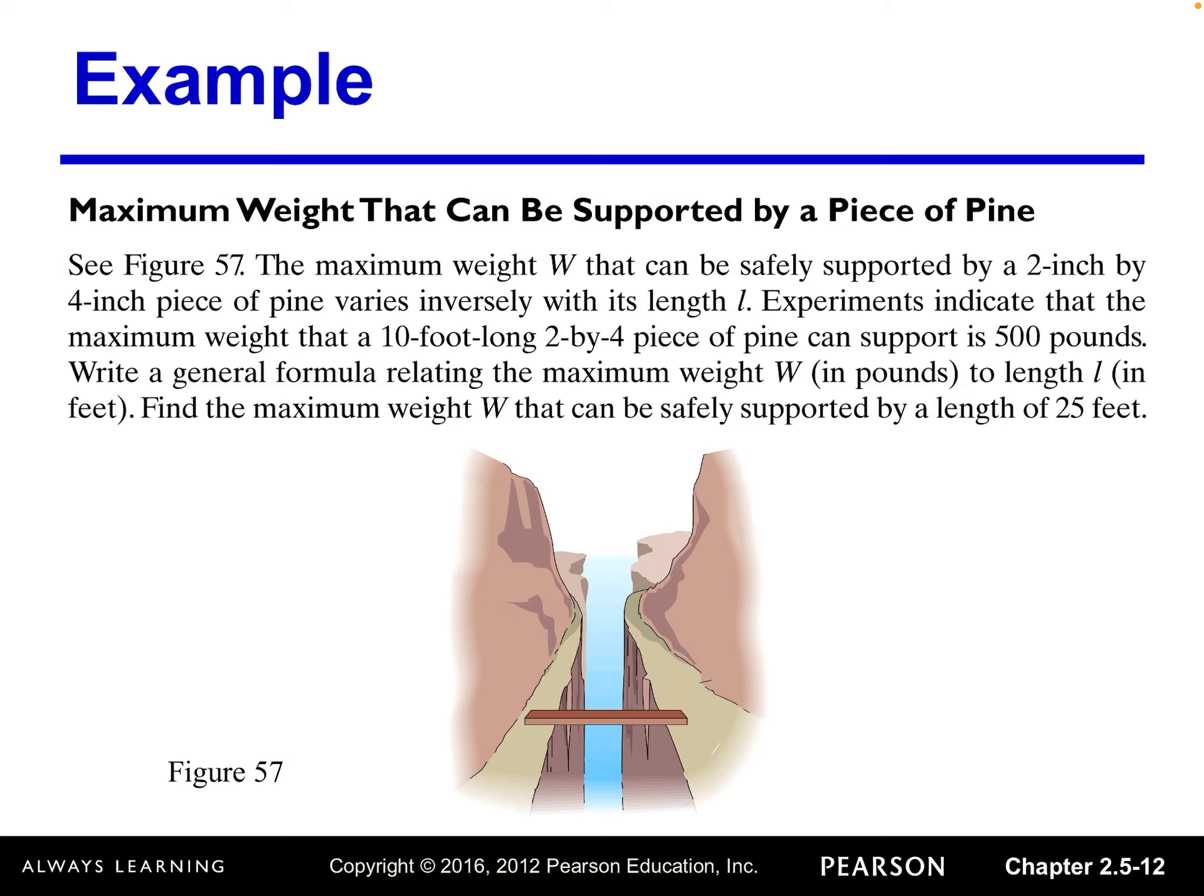Experiments indicate that the maximum weight that a 10 foot long 2 by 4 inch piece of pine can support is 500 pounds. Write a general formula relating the maximum weight w to length l. Find the maximum weight w that can be safely supported by a length of 25 feet.